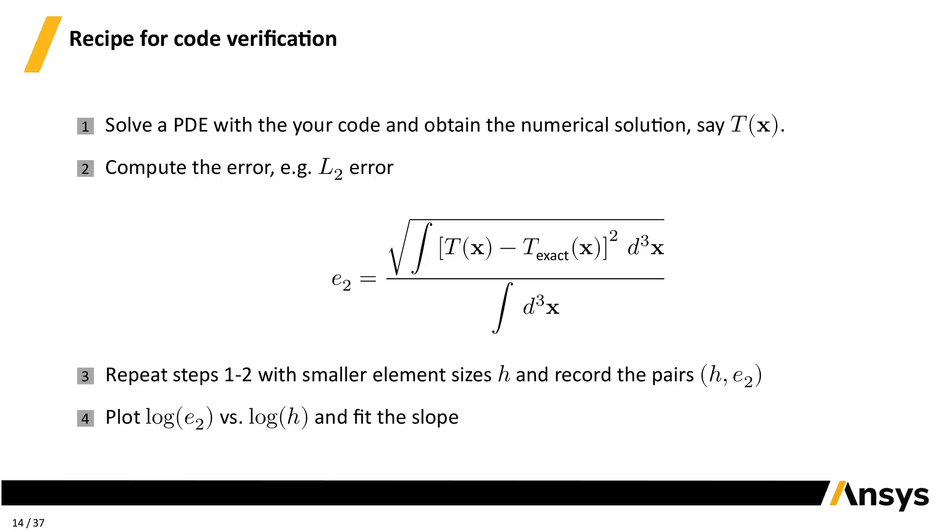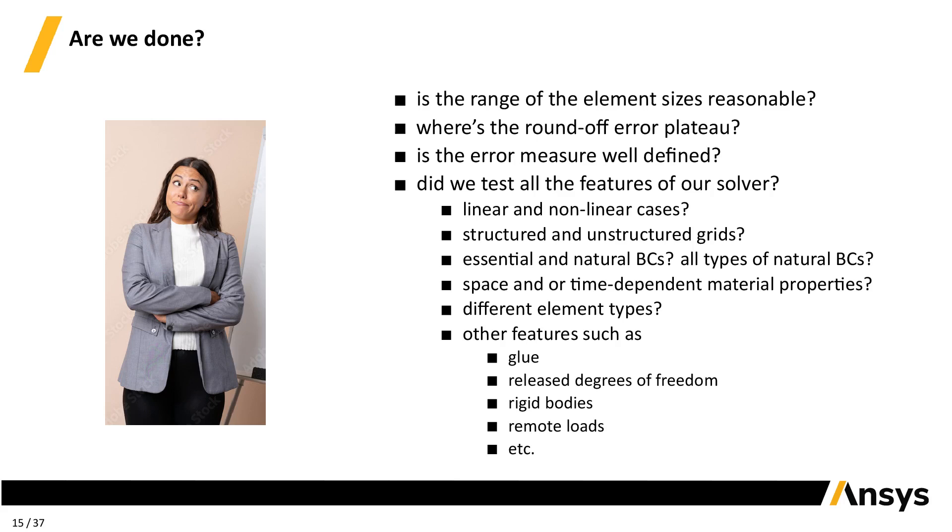Well, yes and no. Yes, because the error converges to zero with the right rate. But is the range of the element size reasonable? Where's the round-off error plateau? Is the error measure well defined? Did we test all the features our solver has? And a long list continues. In principle, we have to test mutually exclusive features only, but comprehensively traversing the list of features might lead to an exponential blowout of combinations to test.